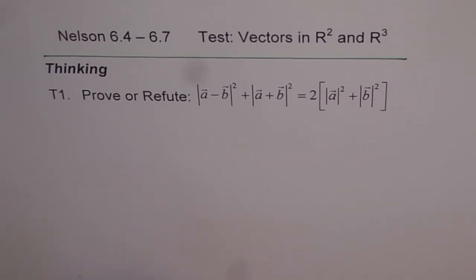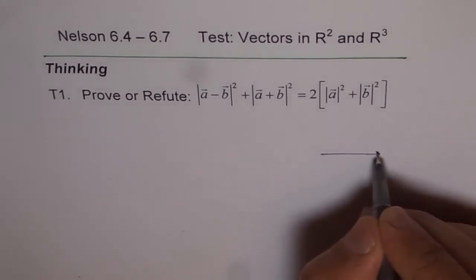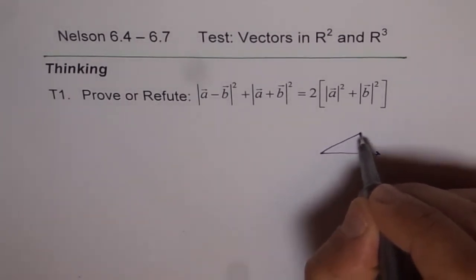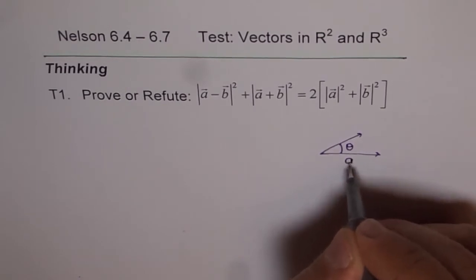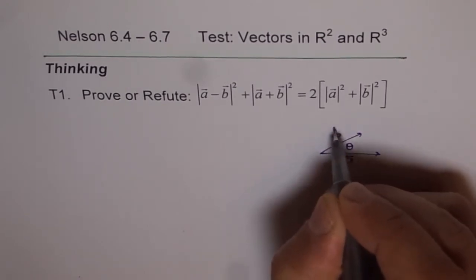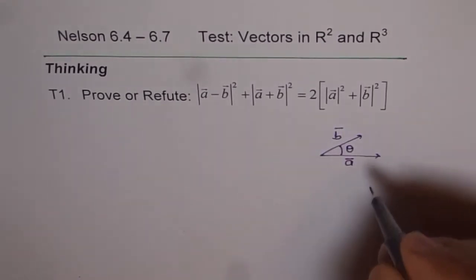We're talking about two vectors A⃗ and B⃗. Let's assume this is vector A⃗ and this is vector B⃗, and the angle between them is θ. What is A⃗ + B⃗? You can complete the parallelogram, and then this line gives you A⃗ + B⃗.